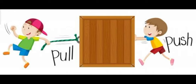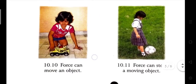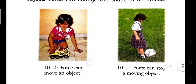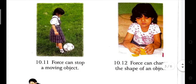Force can do many things: force can move an object, force can stop a moving object, and force can change the shape of an object. By applying force we can move an object — in this picture a girl is moving a toy. By applying force we can stop a moving object, like stopping a rolling ball. Or by force we can change the shape of an object.